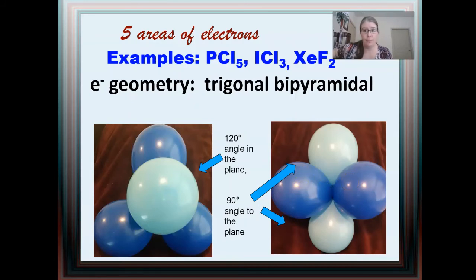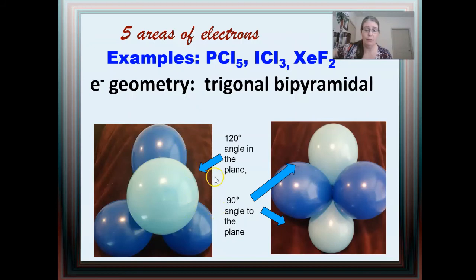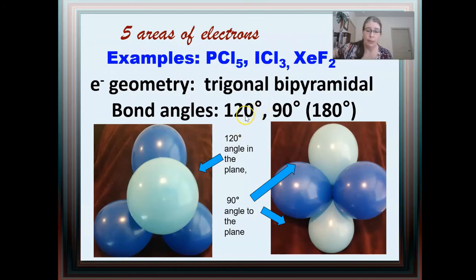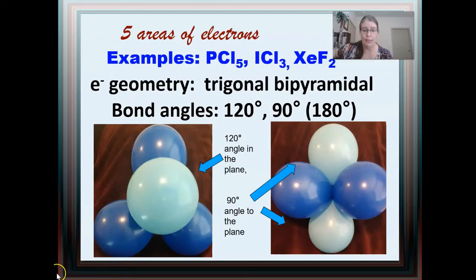The molecular geometries for trigonal bipyramidal become fairly complex. All five areas of electrons are around the center, and looking head-on you can see the trigonal plane where you have a 120-degree angle. The bipyramidal refers to the light blue balloons coming up out of the plane and down behind the plane, giving two sets of bond angles: 120 degrees in the plane between the dark blue balloons, and 90 degrees from the light blue to the dark blue. The angle from top to bottom is 180 degrees.